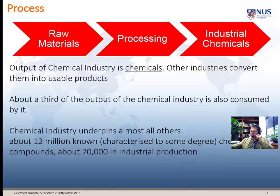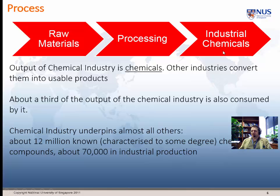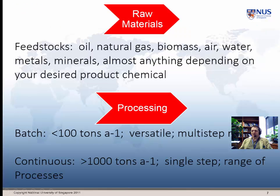Because the chemical industry produces the goods that other industries need — in this case chemicals — it might be interesting to know there are probably about 12 million known and to some degree characterised chemicals, and about 70,000 are in industrial production. So it's a big business. Raw materials — we're going to talk about a bit more in a minute, or rather you can look in the extra slides for some aspects of this.